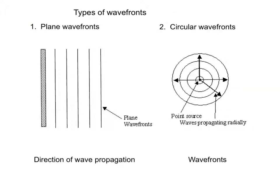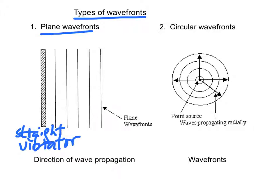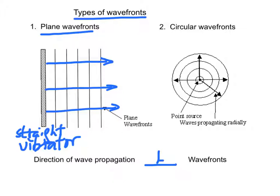There are two types of wave fronts. First, the plane wave front. Plane wave fronts are generated by a straight vibrator. And the direction of wave propagation is perpendicular to the wave front.